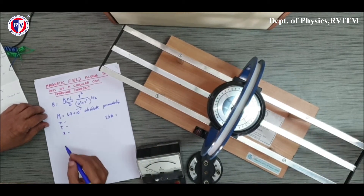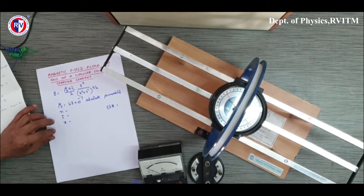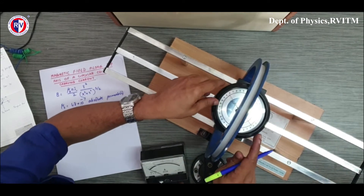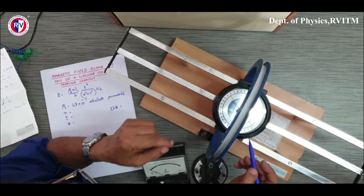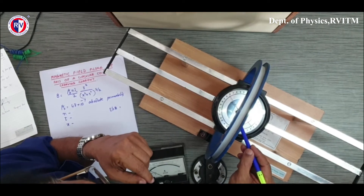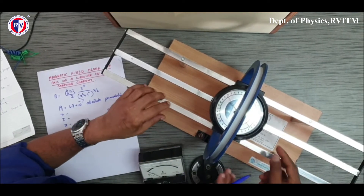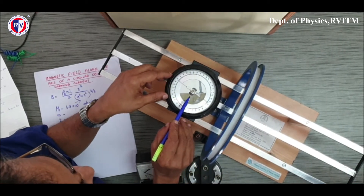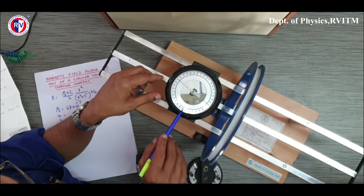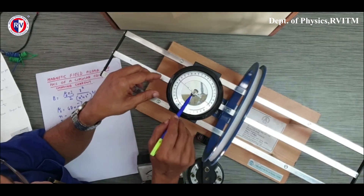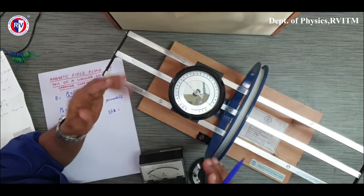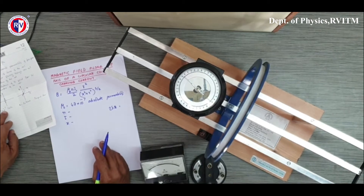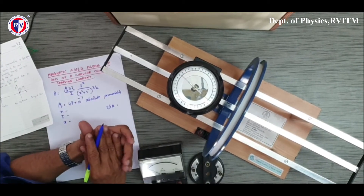To measure the field strength, we are using a compass box. In this compass box you can see there is a small magnet, and this magnet will always align along the Earth's field if there is no other field present. Earth has a magnetic field; its field strength is 3.5 × 10 to the power minus 5 tesla, which we call B-zero.